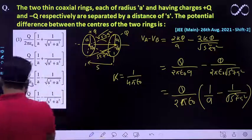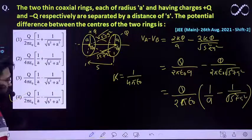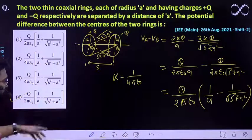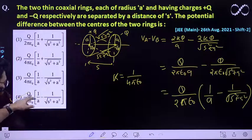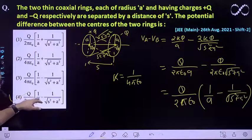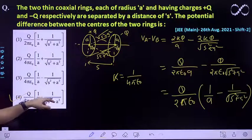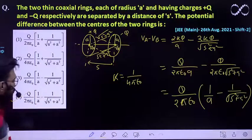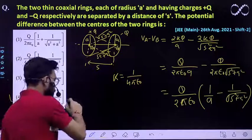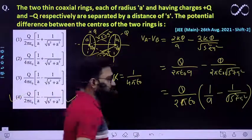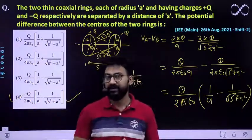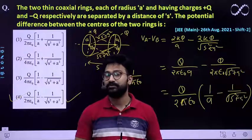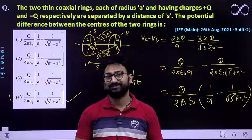So our fourth option is the correct answer: VA − VB = q/(2πε₀) × [1/A − 1/√(s² + A²)]. I hope this question is clear to everyone. Thank you.